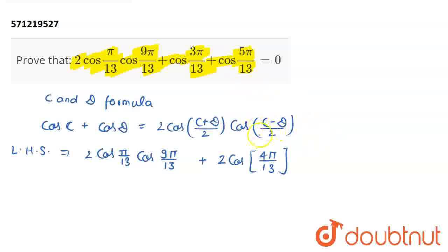And the other term becomes cos of C minus D, that is, 5 pi minus 3 pi, 2 pi by 13, divide by 2, that is, cos pi by 13. Now, you can observe that we can take 2 cos pi by 13 common. We have 2 cos pi by 13 in both the terms. So, taking 2 cos pi by 13 common, it becomes cos of 9 pi by 13 plus cos of 4 pi by 13.